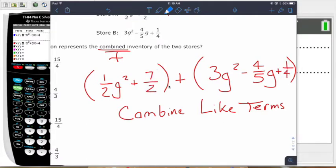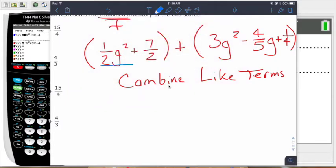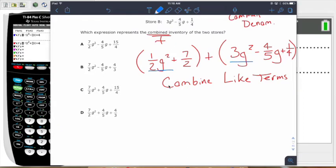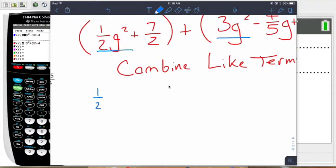So when we're adding polynomials, this is like combining like terms. That means G's with G's, G squareds with G squareds, and constants with constants. Now, since some of these are fractions, we've got to keep in mind to add or subtract fractions, you need a common denominator. I'm going to show you an easier way to do this in a second, but it's good to practice some mental math here. So we're going to do the G squared, the 1/2 G squared plus the 3G squared.